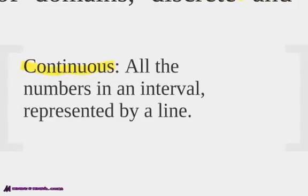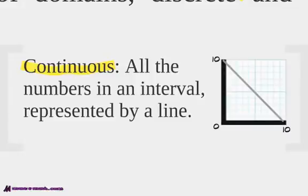The other kind is called continuous, and it's all the numbers in the interval, represented by a line. So here, you have a whole straight line. Every single number is represented there, from 0 to 10. It's called continuous. The domain here is continuous.